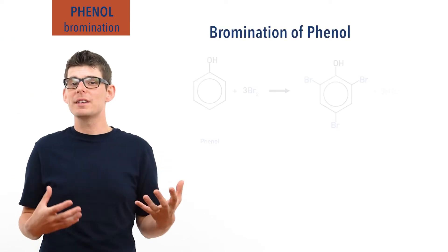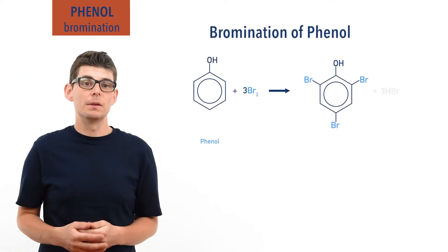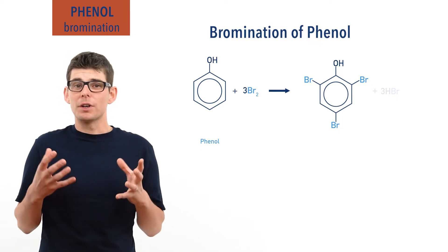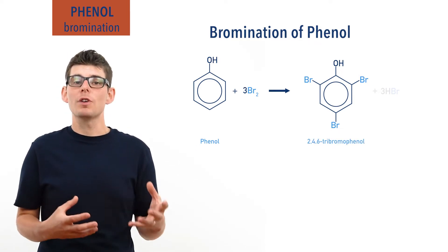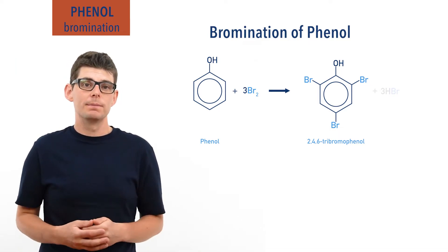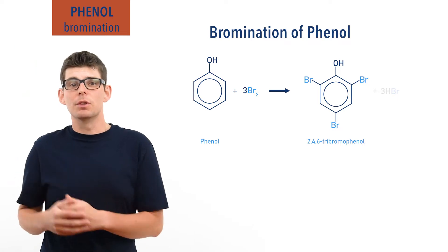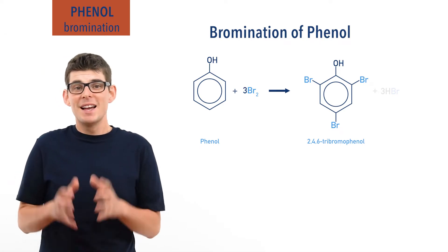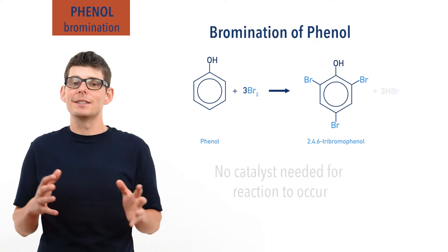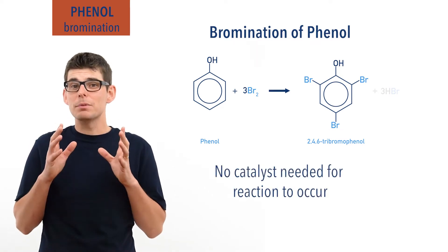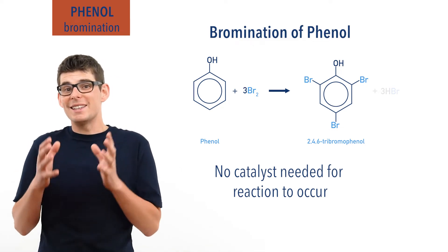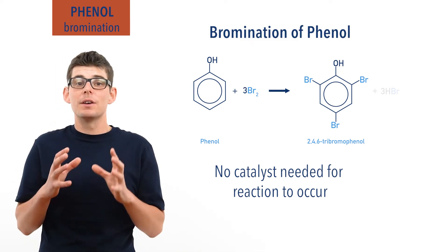Phenol can react directly with bromine to form bromophenol — this is called a bromination reaction. The actual product formed is 2,4,6-tribromophenol, as phenol is able to undergo multiple substitutions of bromine. This will be covered a little bit later on in the video. Unlike in the bromination of benzene, no halogen carrier catalyst is needed, and you should be able to explain this ability of phenol to react directly with bromine, as it's often a particular favourite area for examiners.